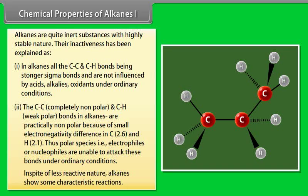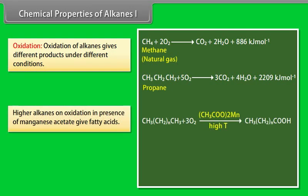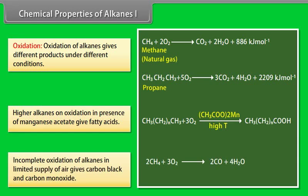In spite of less reactive nature, alkanes show some characteristic reactions. Oxidation: Oxidation of alkanes gives different products under different conditions. Alkanes are heated in the presence of air or dioxygen and completely oxidized to carbon dioxide and water with the evolution of large amount of heat. Higher alkanes on oxidation in presence of manganese acetate give fatty acids. Incomplete oxidation of alkanes in limited supply of air gives carbon black and carbon monoxide: 2CH4 plus 3O2 gives 2CO plus 4H2O. CH4 plus O2 gives C plus 2H2O.